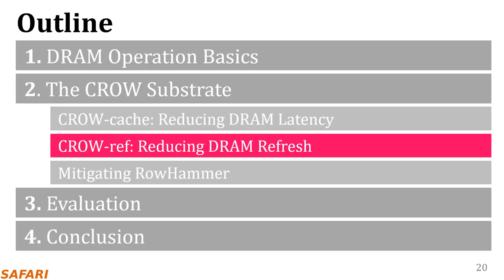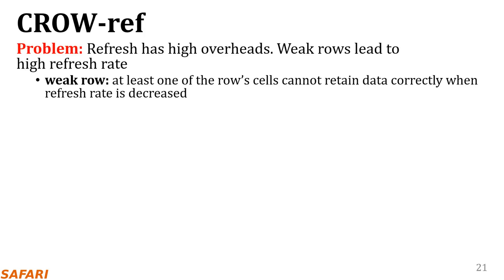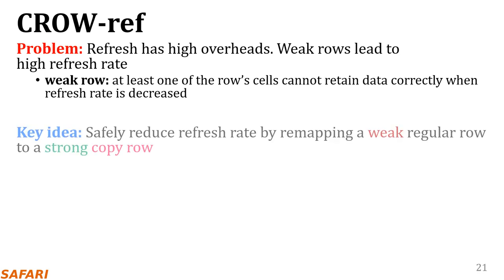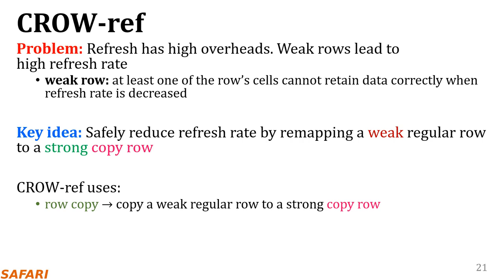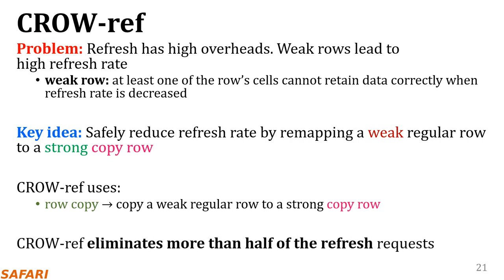Now let me explain how we mitigate the refresh overhead using the CROW substrate. DRAM refresh operations have high performance and energy overheads, and weak rows prevent reducing the refresh rate. We define a weak row as a row that has at least one cell that cannot retain data correctly when the refresh interval is increased. We use the CROW substrate to implement CROW ref, whose key idea is to reduce refresh rate by remapping a weak regular row to a strong copyrow. CROW ref uses the row copy operation to remap a weak regular row to a strong copyrow, thereby doubling the refresh interval — in other words, eliminating half of the refresh requests that the memory controller must issue.